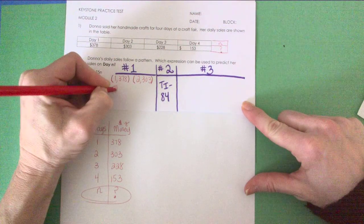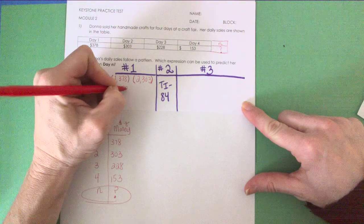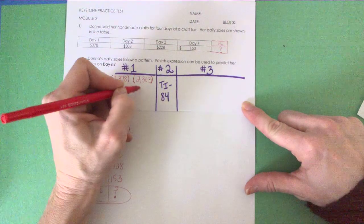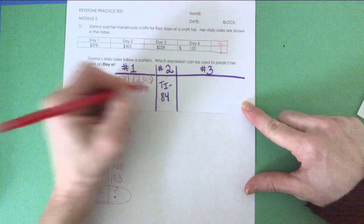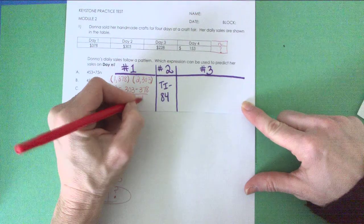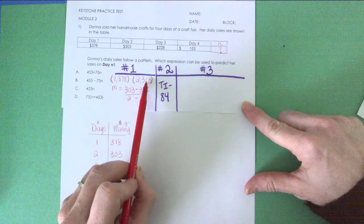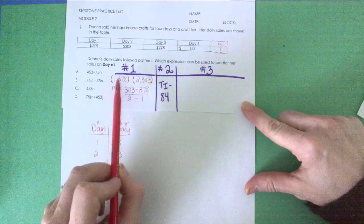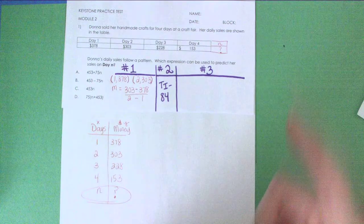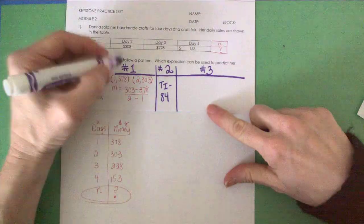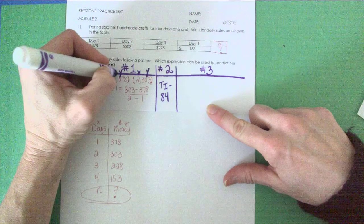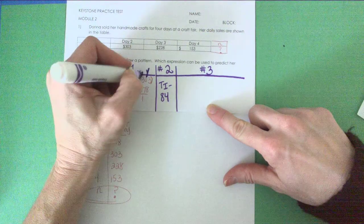I'm going to start with my slope. I know to find slope, I'm going to take 303 minus 378 all over 2 minus 1. If you think back to your classwork, that's going to be your Y sub 2 minus your Y sub 1 divided by your X sub 2 minus your X sub 1. That would be if I'm giving my coordinates X, Y, X, Y, first set, second set.